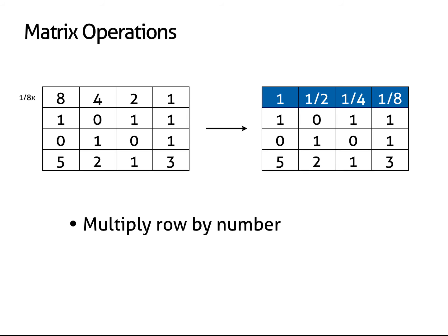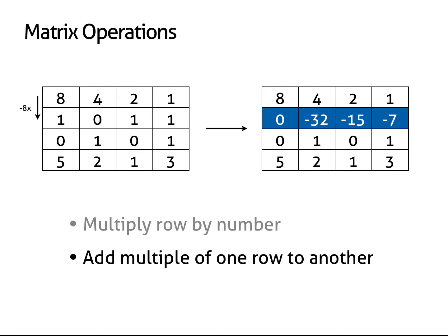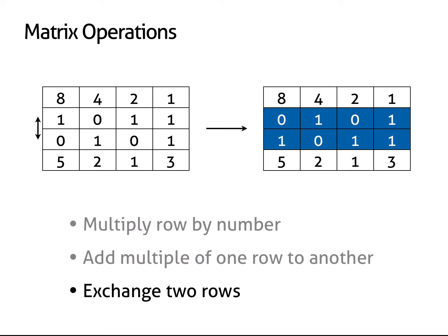The previous example used some matrix operations. There are only three of them you'll need to know, and they're pretty simple. First, in any row we can multiply each number by the same number. Second, we can add a multiple of any row to any other row. Finally, any two rows can be exchanged. That's all there is to it.